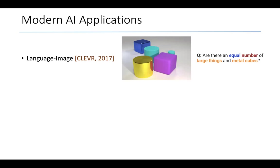The first is from 2017. This is a diagnostic dataset that was developed at Stanford called CLEVR, which stands for Compositional Language and Elementary Visual Reasoning, where you are given an image and a natural language question. The goal is to answer the question with respect to the image, in this case whether there are an equal number of large things and metal cubes.